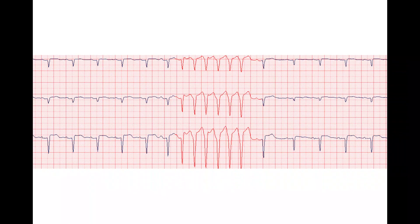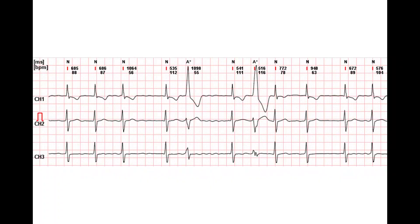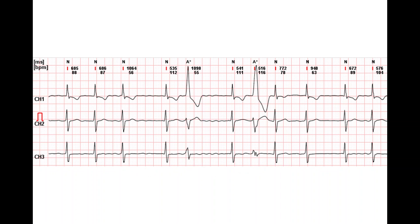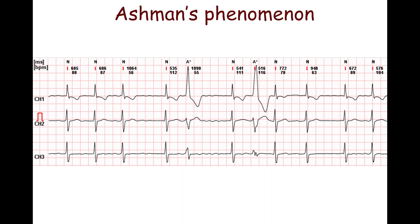In patients with rate-dependent bundle branch block and supraventricular tachycardia, wide complexes are almost always present — in other words, there is aberrant conduction. In patients with atrial fibrillation, a long RR interval is sometimes followed by a short RR interval, which is terminated by an aberrant QRS complex. This phenomenon is referred to as the Ashman phenomenon.